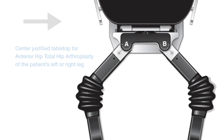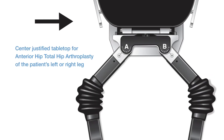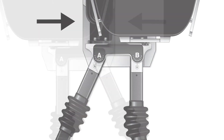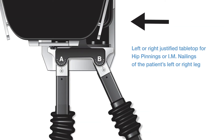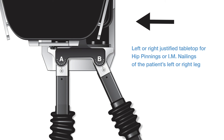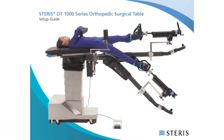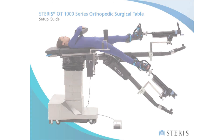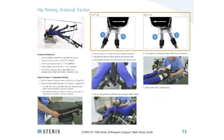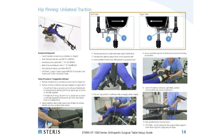The centered position is typical for anterior hip cases, whereas left justified or right justified positions are typical for an operative left or right leg fracture or trauma procedure, such as hip pinnings or IM nailings. Refer to pages 8 to 21 of the OT Table Setup Guide to verify the appropriate tabletop slide position shown in the illustrations.